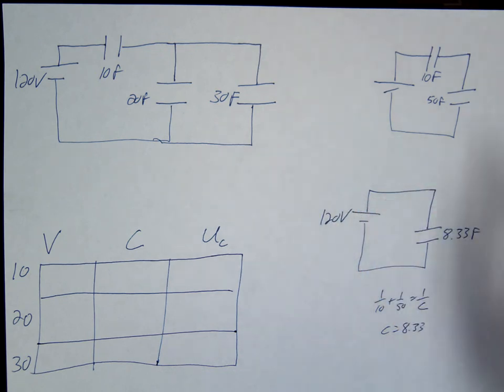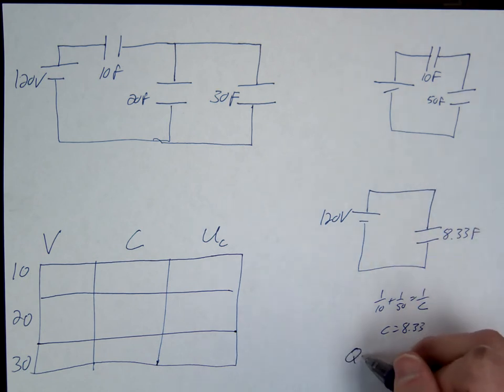Alright, let's just work the way backwards. So we have 120, and we have the capacitance. We're missing the charge. So we're going to solve for the charge.